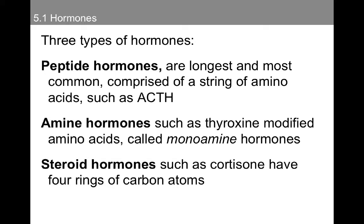We have three types of hormones we're going to talk about: peptide hormones, amine hormones, and steroid hormones. Peptide hormones are the longest, they're most common, and they're comprised of a string of amino acids — adrenocorticotropic hormone will be an example we'll discuss in more detail. We also have amine hormones, such as thyroxine, which exerts its effect with the thyroid gland — these are modified amino acids, also called monoamine hormones. And we're going to talk about steroid hormones, which are different from the neurotransmitters we've been discussing — an example would be cortisone, which has four rings of carbon atoms.